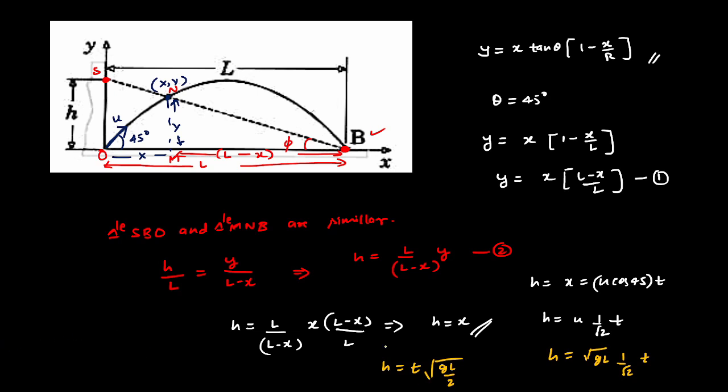So dear students here, for those who got some problem with this, how I took u is equal to root of gl, we have the r max equals u squared by g expression, where theta equals 45 degrees. Now we have here that range is l. So u squared by g, so u is going to be root of lg. Like this, we got h as a function of time. So that's the solution for this particular problem.